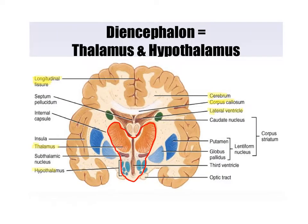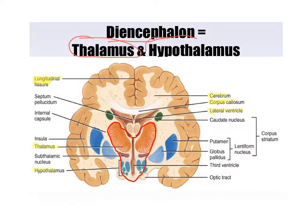Hello everybody. I'd like to welcome you back to another exciting edition of Head Puzzle Lecture Notes. Today's objective: what are the structures and the functions of the diencephalon? The diencephalon is comprised mostly of the thalamus and the hypothalamus.